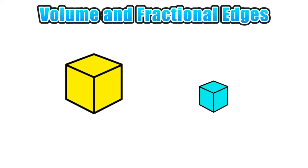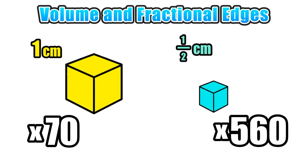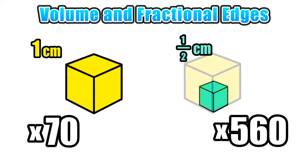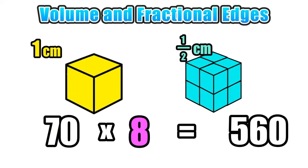Let's compare the two units of measurement used to express the volume of that rectangular prism. In terms of one-centimeter cubes, the figure's volume was 70. In terms of one-half centimeter cubes, the figure's volume was 560. A one-centimeter cube is the equivalent of eight one-half centimeter cubes. So if we multiply 70 by 8, our result is 560. This helps us understand how the expressed volume of a figure depends on the unit we choose to use.